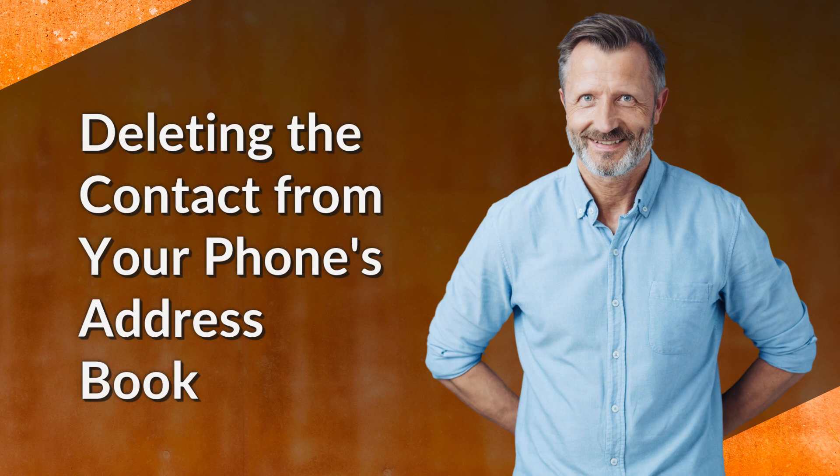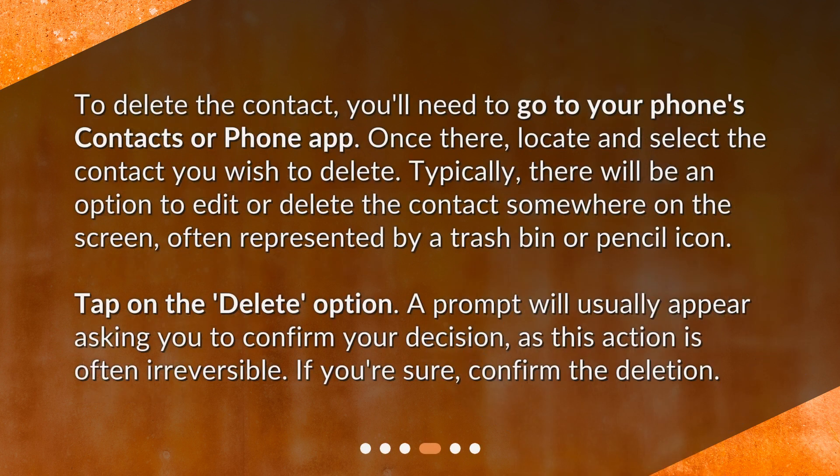Deleting the contact from your phone's address book. To delete the contact, you'll need to go to your phone's contacts or phone app. Once there, locate and select the contact you wish to delete. Typically, there will be an option to edit or delete the contact somewhere on the screen, often represented by a trash bin or pencil icon. Tap on the delete option. A prompt will usually appear asking you to confirm your decision, as this action is often irreversible. If you're sure, confirm the deletion.